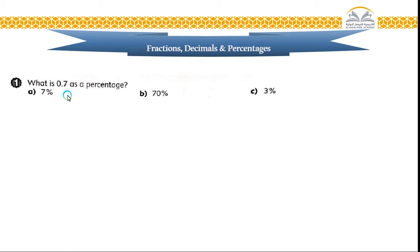Starting by the first way, you remember that if I want to change any decimal to percentage, you can simply multiply by 100. And you know how to multiply decimal by multiple of 10. You will get 70%.